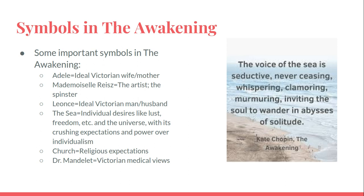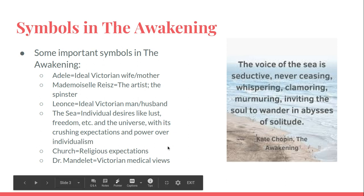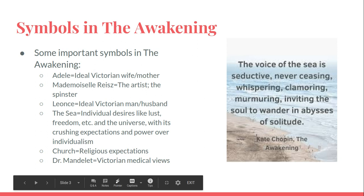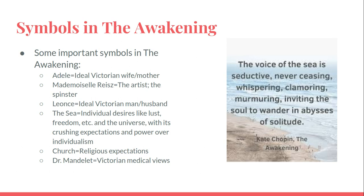The ocean is also pretty symbolic in The Awakening and symbolizes a lot of different things — it can symbolize individual desires, the universe, and all kinds of things. So the sea is really important in this text. We also see some churches in the novel, and those can be symbolic of different things, but one of the things they symbolize is those religious expectations that were even more prevalent at the time.